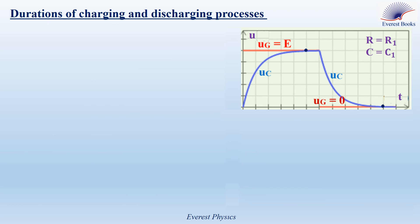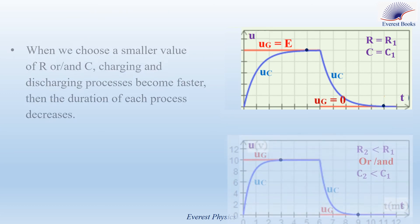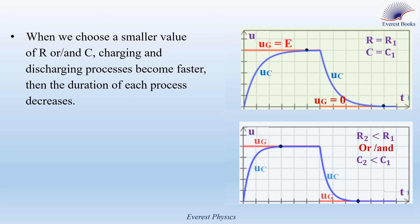According to the previous simulations, we conclude that the time to reach steady state during charging and discharging depends on the values of C and R. When we choose a larger value of R or C, charging and discharging processes become slower and the duration of each process increases. When we choose a smaller value of R or C, charging and discharging processes become faster and the duration of each process decreases.